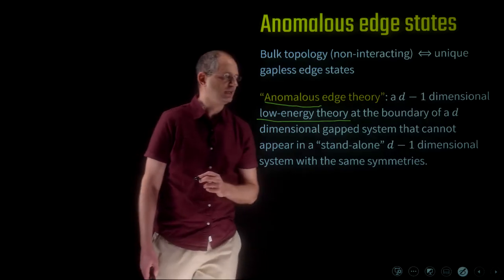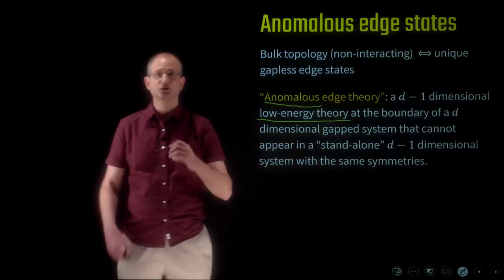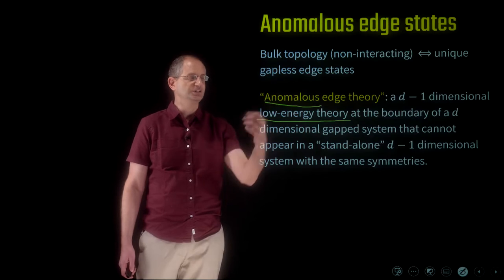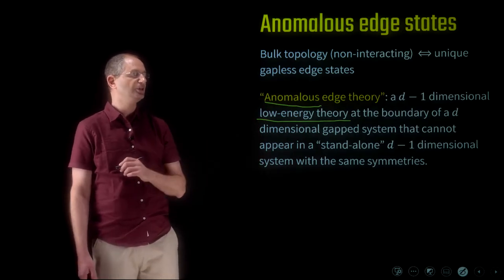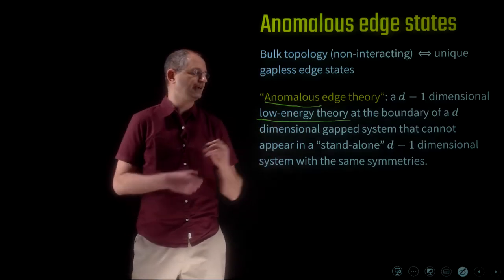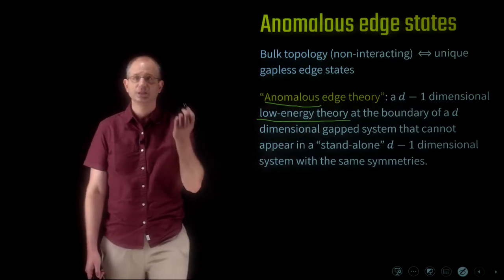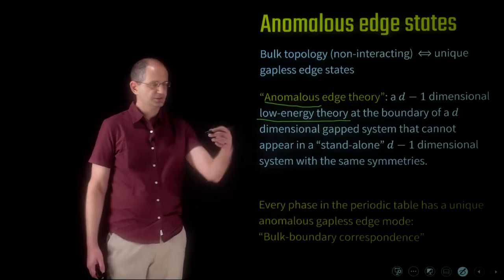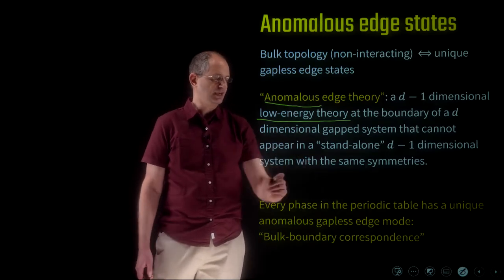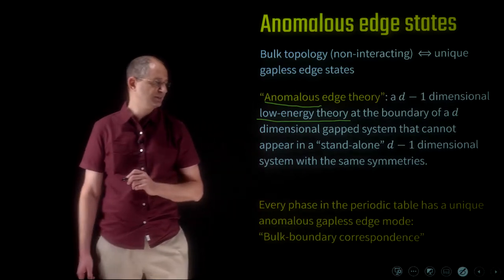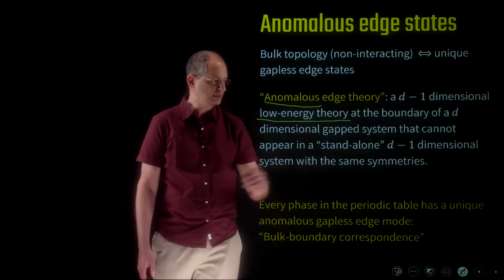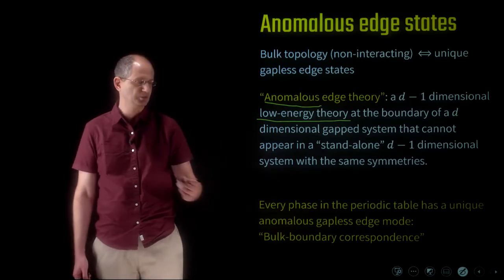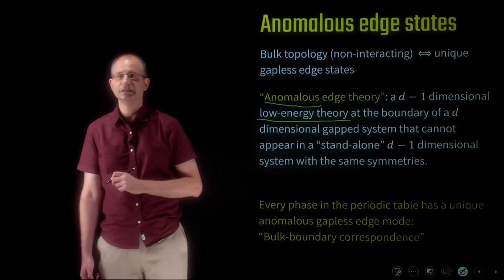...if this kind of theory cannot appear in a standalone d-1 dimensional system with the same symmetry. So we have some low-energy theory describing the surface of our d-dimensional topological phase, and we call it anomalous if it has a property that can never appear in a standalone d-1 dimensional system given a set of symmetries. The statement is that every non-trivial topological phase within the periodic table is characterized by a unique anomalous gapless edge state — this is the bulk-edge or bulk-boundary correspondence.